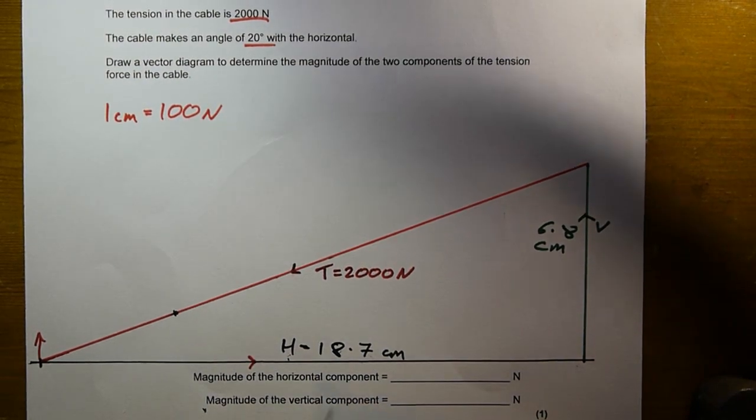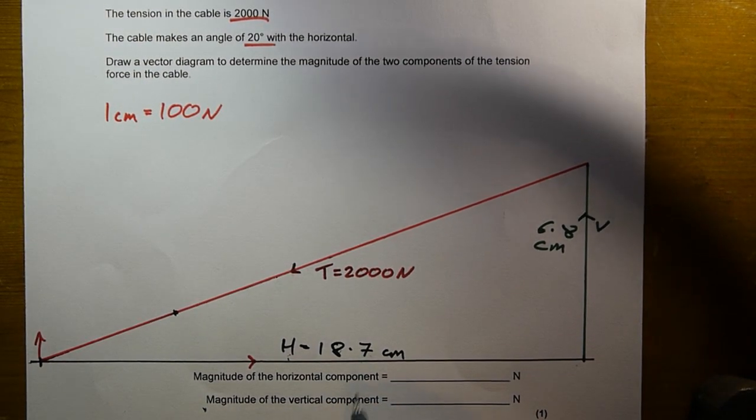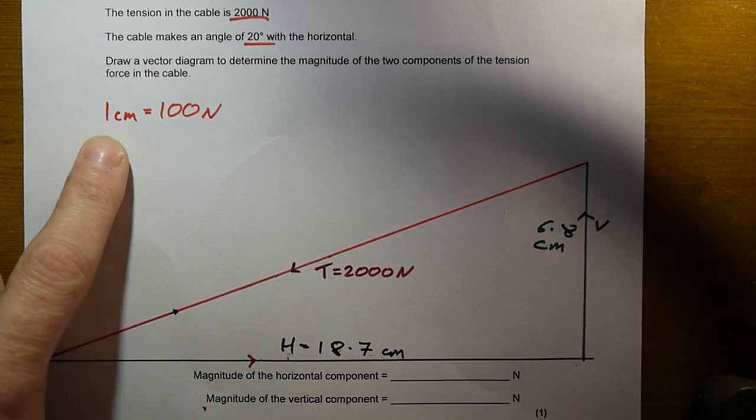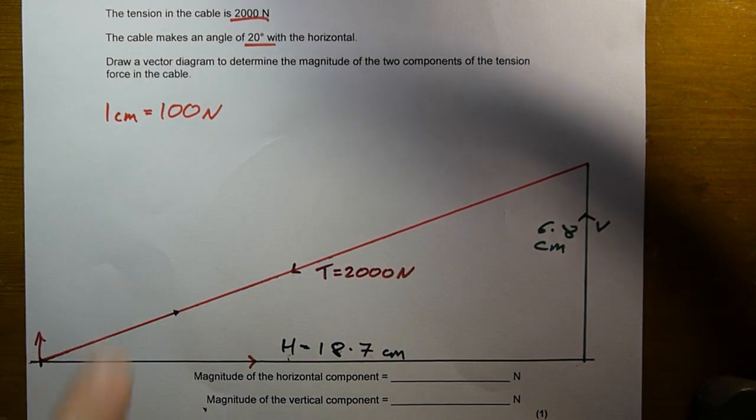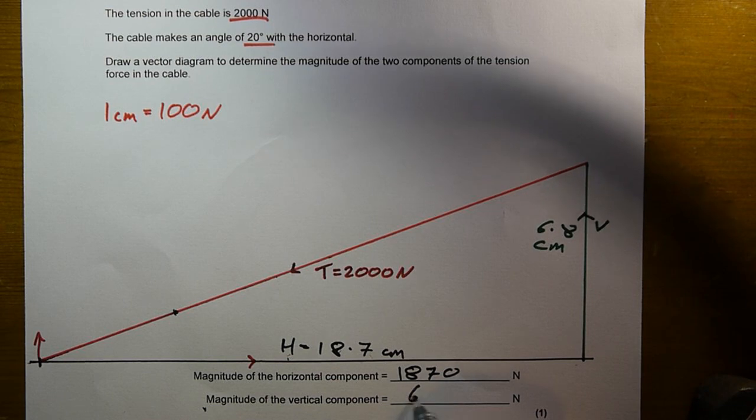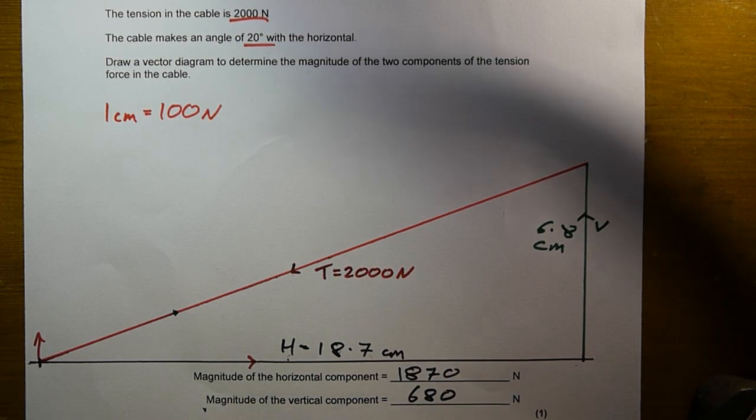So now just using my scale to work out the actual magnitude. Horizontal component 18.7 centimetres. I've got a scale of 1 centimetre equals 100 newtons. So I need to multiply this by 100. So my magnitude for the horizontal component is 1,870 newtons. And the magnitude of the vertical component, well, the length is 6.8 centimetres. Multiply that by 100 gives me 680 newtons.